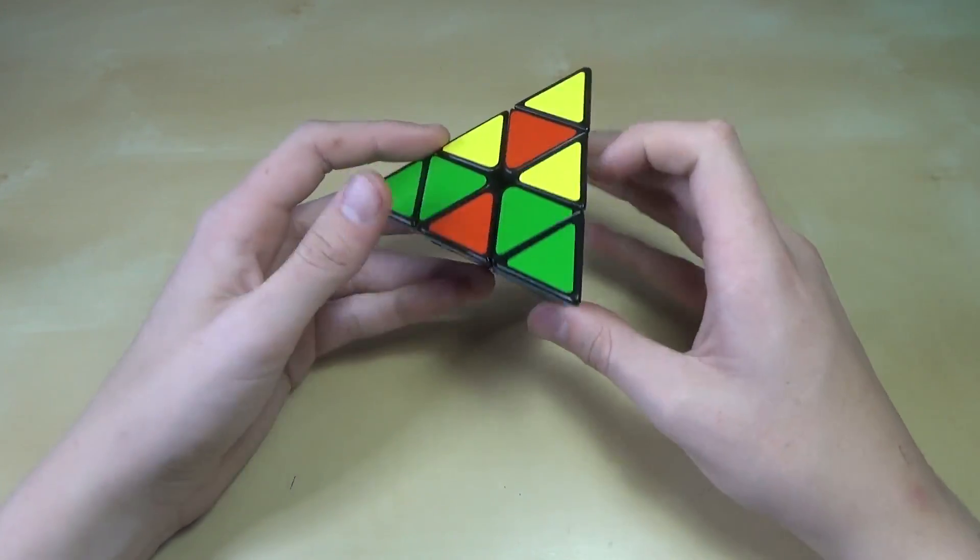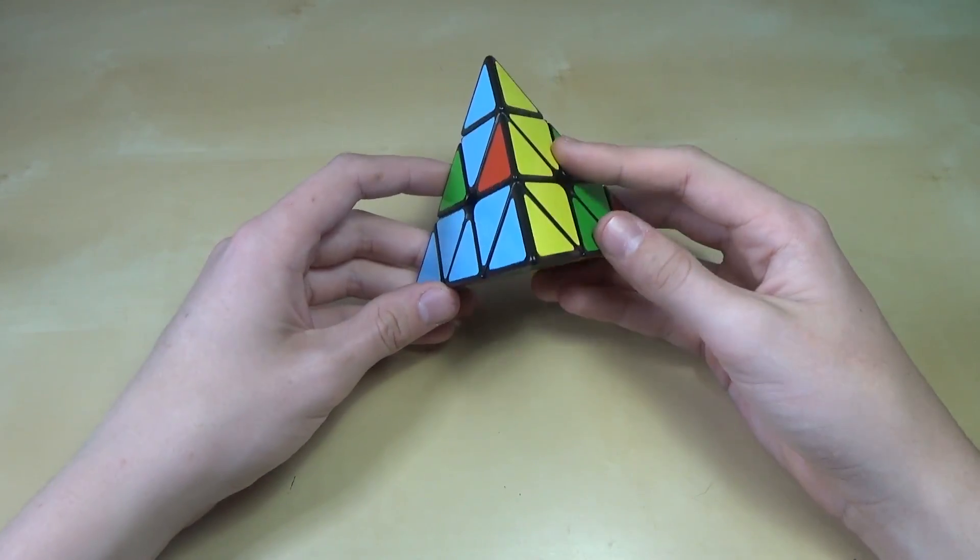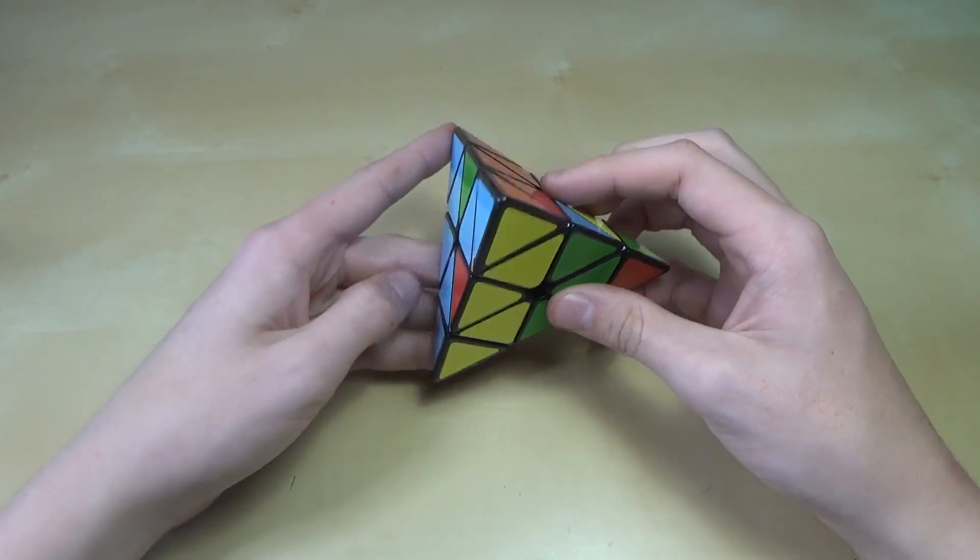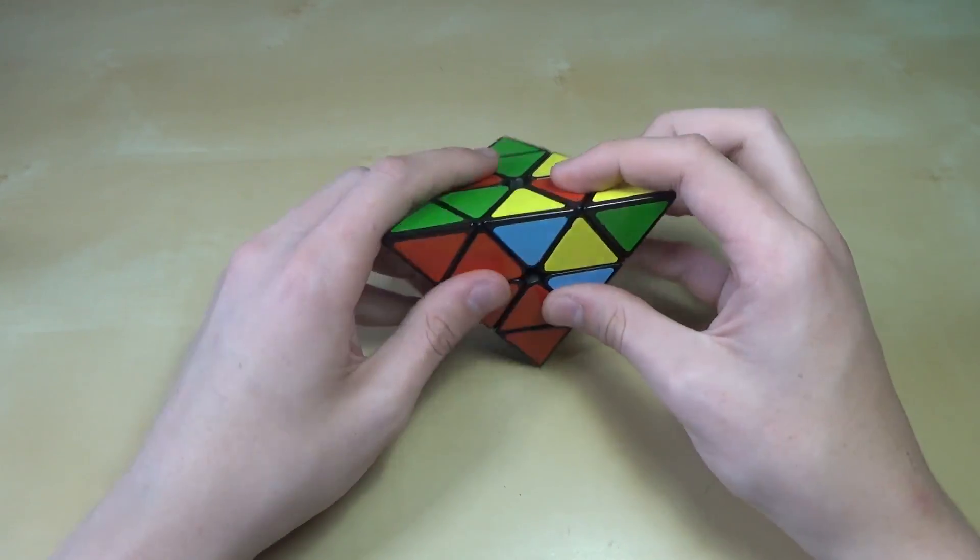Now, assuming that you know Keyhole, this method starts off very similar to Keyhole, where you get two pieces into place. But there's actually a little bit of a change. We'll find one piece and put it into place.